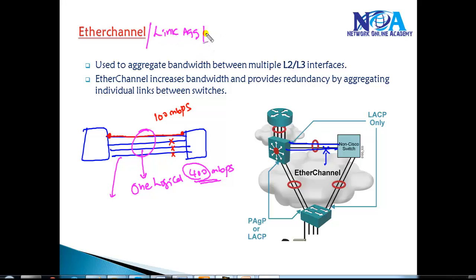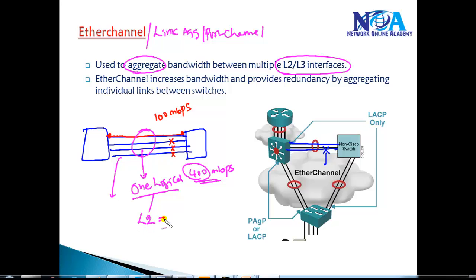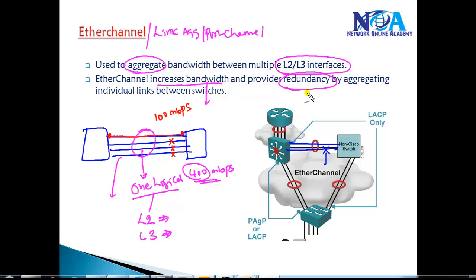EtherChannel can also be called link aggregation or port channel. All three terms refer to the same thing. It is a method where we aggregate bandwidth between Layer 2 and Layer 3 interfaces. Once the logical link is created, we can use it as a normal Layer 2 interface for forwarding switching traffic, or as a Layer 3 interface where we can assign IP addresses. It also increases the efficiency of the link by forwarding traffic across all four links.